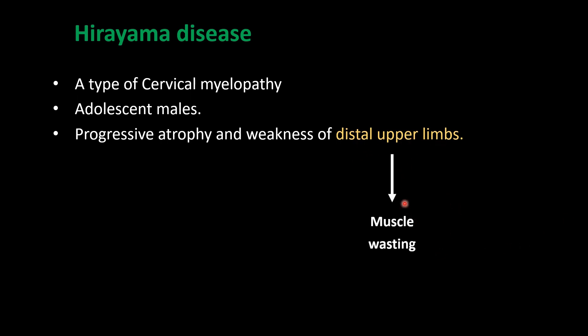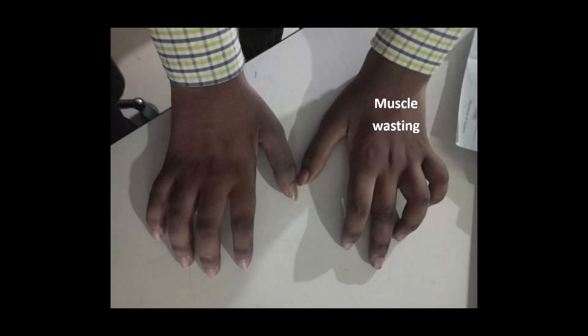The distal upper limbs show muscle wasting, as seen in this case. In the left hand you can see some muscle wasting if you compare it to the right hand.